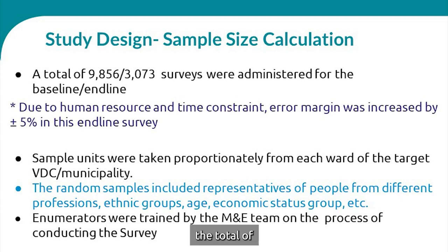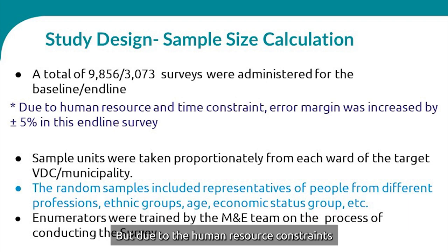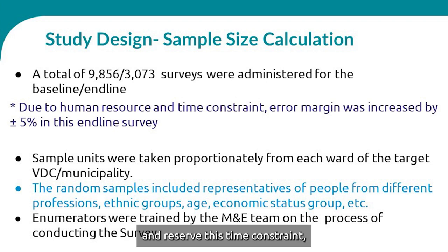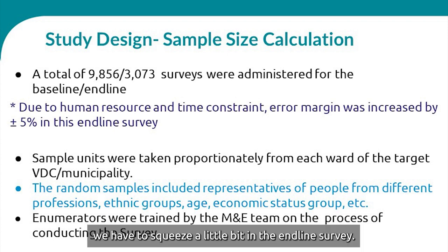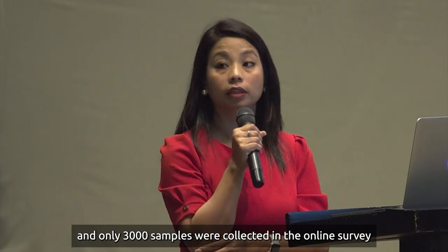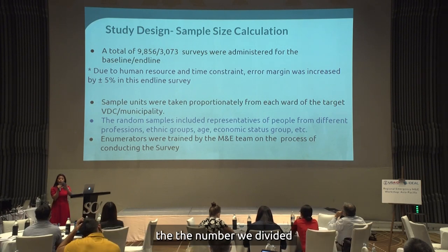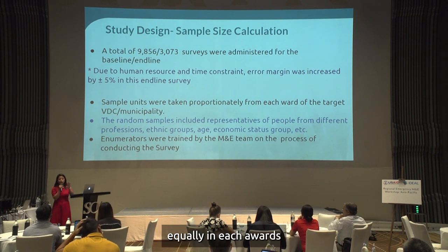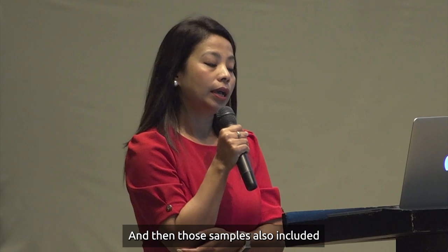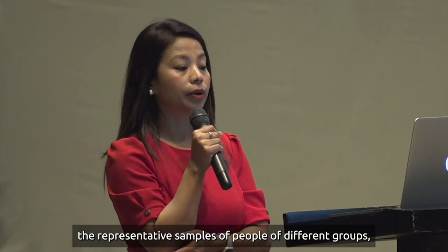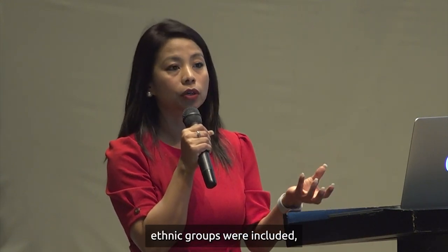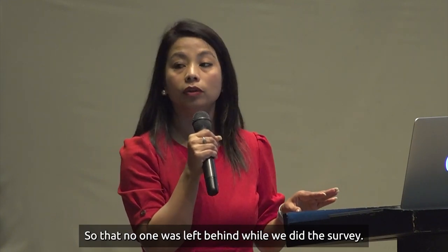For the baseline, a total of 9,800 surveys were administered in the program area. Due to human resource and time constraints in the endline survey, the error margin was increased from 5% to 10%, and only 3,000 samples were collected. Samples were taken proportionately from each ward, and also included representative samples of elderly people, different ethnic groups, and economic groups, so no one was left behind.